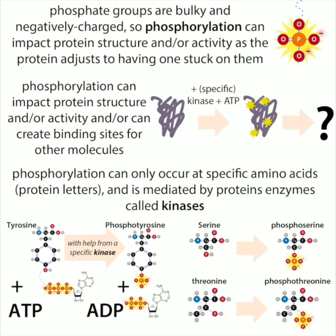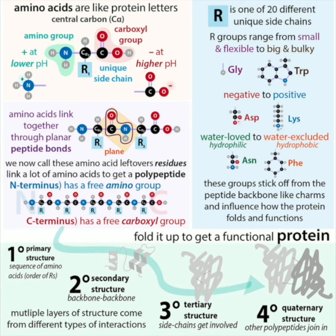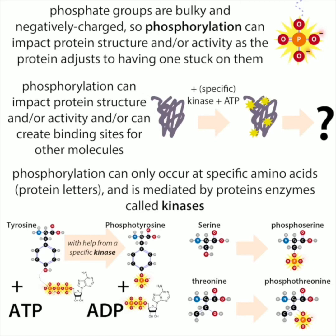When a protein is made in translation, you start with just a long chain of amino acids — amino acids are the protein letters — and that chain folds up to make a protein. The protein folds because all those amino acids are trying to find their best partners: putting negatively charged things by positively charged things, putting parts that don't like water — hydrophobic parts — away from water, and putting parts that do like water — hydrophilic parts — near the water. Now imagine you add a negatively charged, bulky phosphate group onto this nicely folded protein. That's going to mess things up, kind of like packing your suitcase perfectly and then realizing you have a big thing to stuff in there.